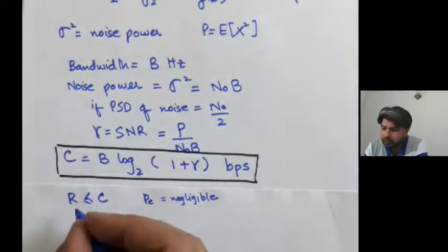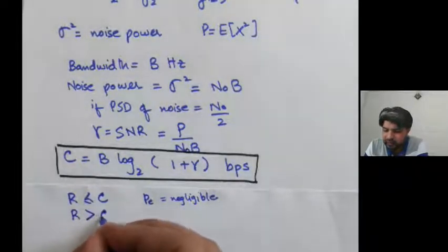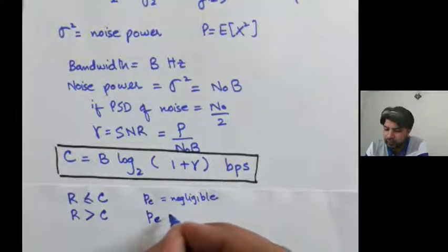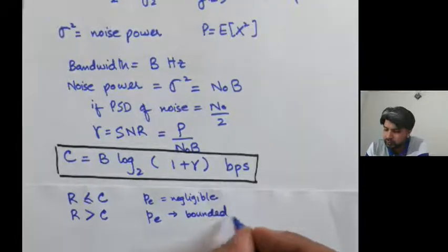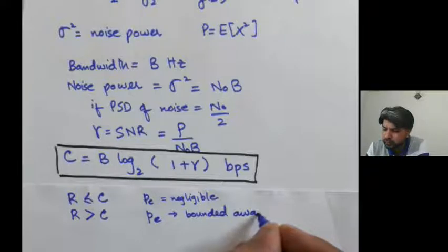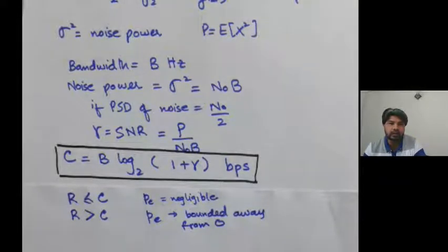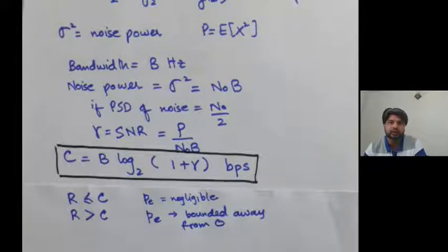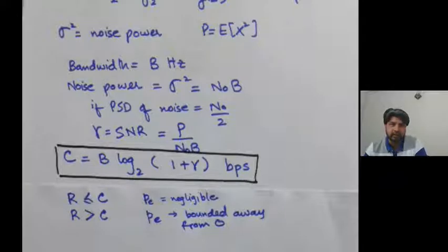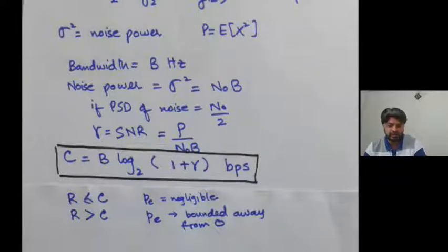The converse theorem says that if you try to transmit at a rate greater than C, then the probability of error would be bounded away from zero — you would not be able to transmit at arbitrarily small error probability. So that's what we mean by channel capacity: you can transmit that much information over the channel with negligible error probability, and if you try to transmit above that capacity you would not achieve a negligibly small probability of error.